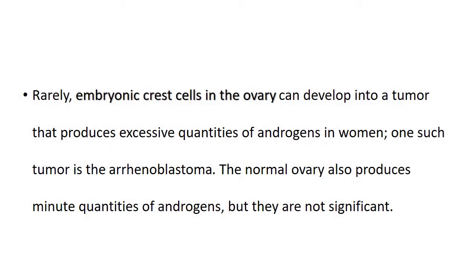Very rarely, the embryonic crest cells in the ovary may develop a tumor that produces excess quantities of androgens in women. One such tumor is called an arrhenoblastoma. The normal ovary also produces minute quantities of androgens, but they are not very significant. So androgen-producing tumors can occur even in females because the embryonic crest cells in the ovary may develop into androgen-producing cells resulting in a tumor.